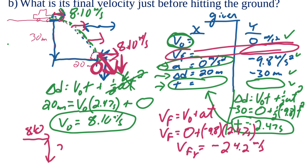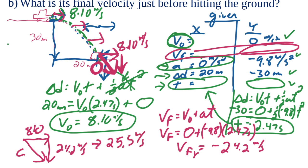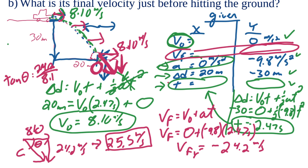Now we solve the triangle using the Pythagorean theorem: 8.10 m/s horizontally and 24.2 m/s vertically. So 8.1² + 24.2² = c², giving c = 25.5 meters per second for the resultant speed. For the angle, we use tan(θ) = 24.2 / 8.1, and taking the inverse tangent gives θ = 71.5 degrees.